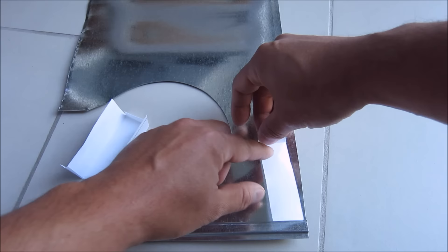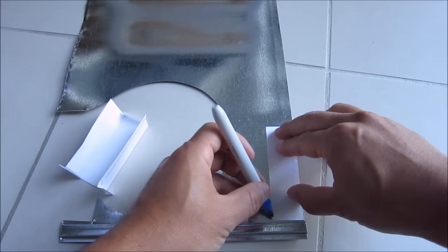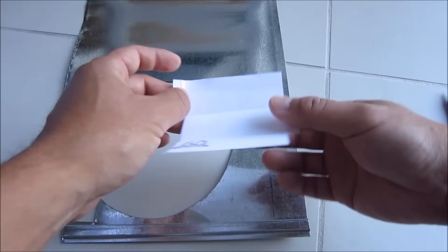Once you have folded your origami, you will put it on the galvanized steel or whatever scrap metal you're using and just pretty much trace it out.